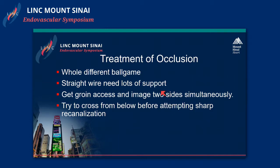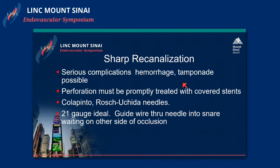Treatment of occlusion is a whole different thing. When patients have occlusions, the stakes are a little bit higher. It's important to get access on both sides — above and below — and try to cross from below before attempting sharp recanalization. Sharp recanalization is risky in terms of hemorrhage. Tamponade perforation must be promptly treated with stents or covered stents.